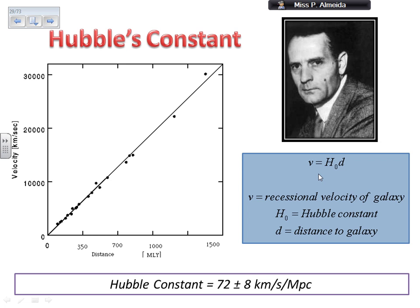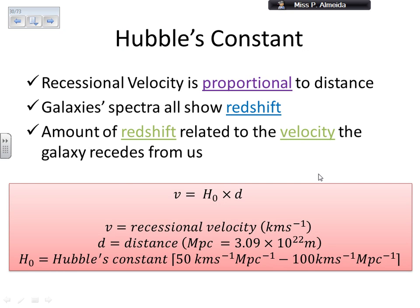You can either use the Hubble constant that they give you or you may be asked to calculate the Hubble's constant from a graph or from some values of velocity and distances. So just to make sure we know what's going on: the recessional velocity is proportional to the distance.